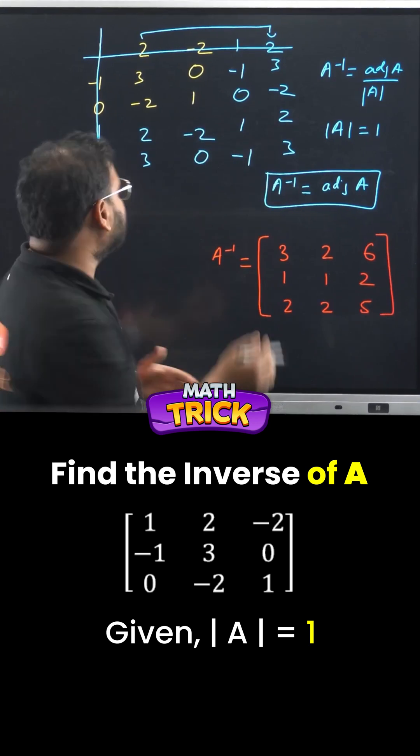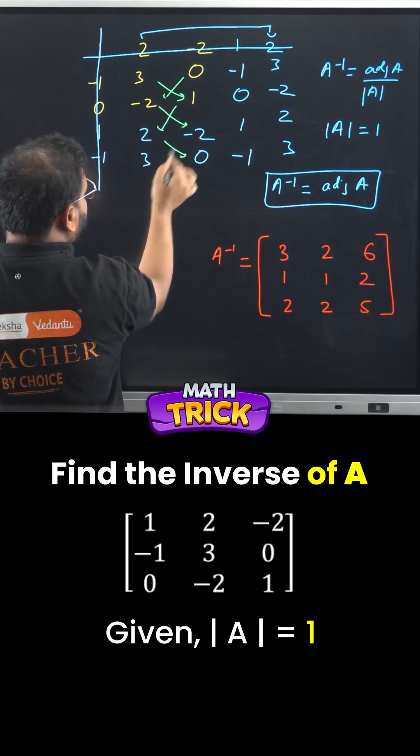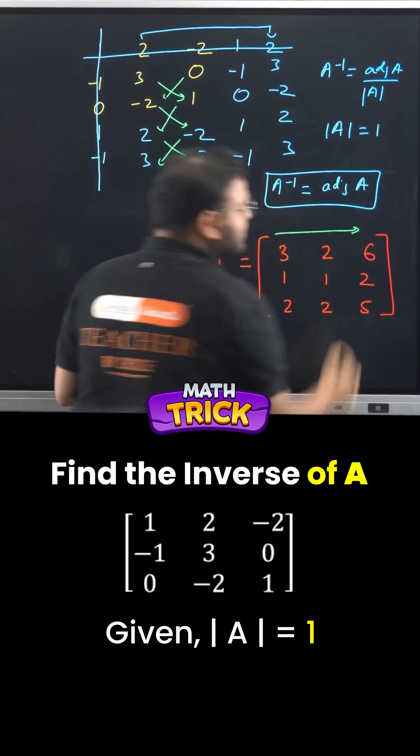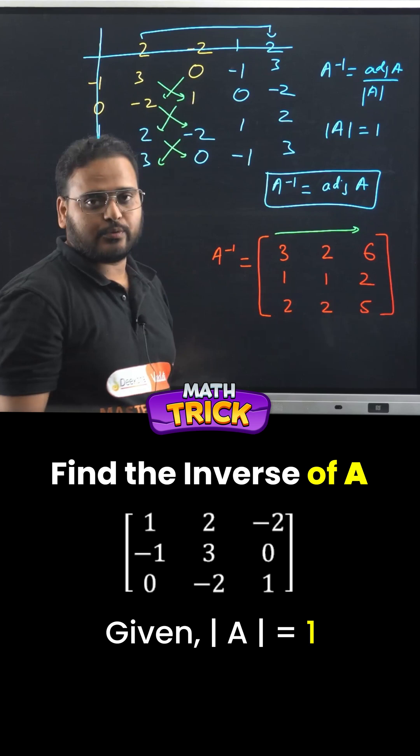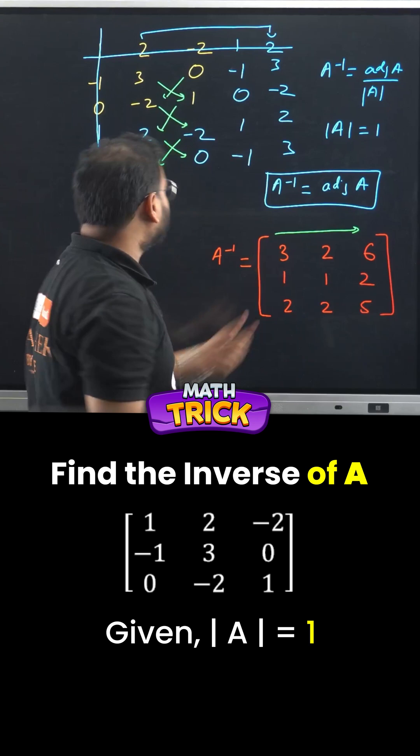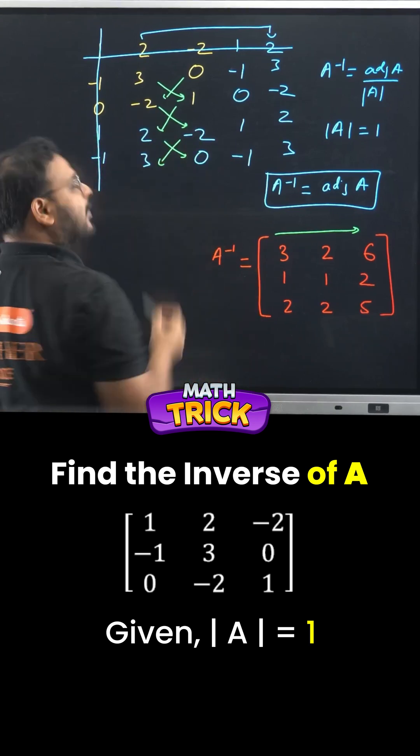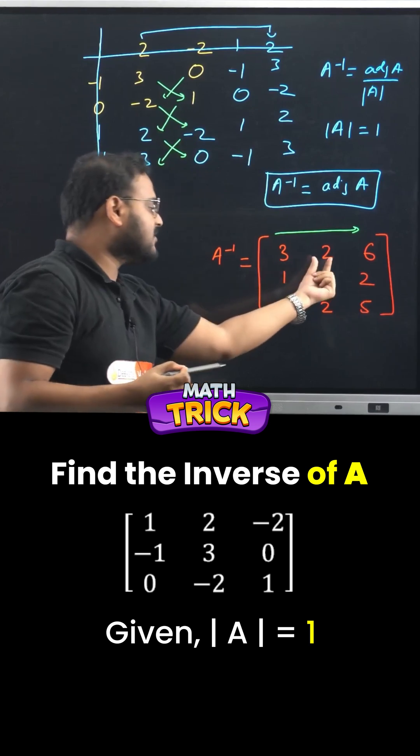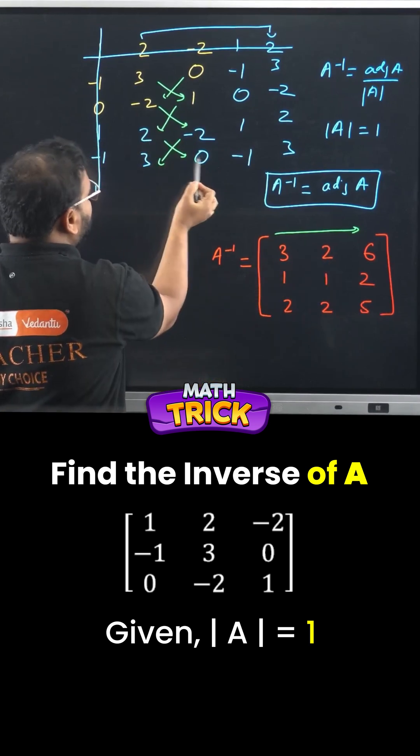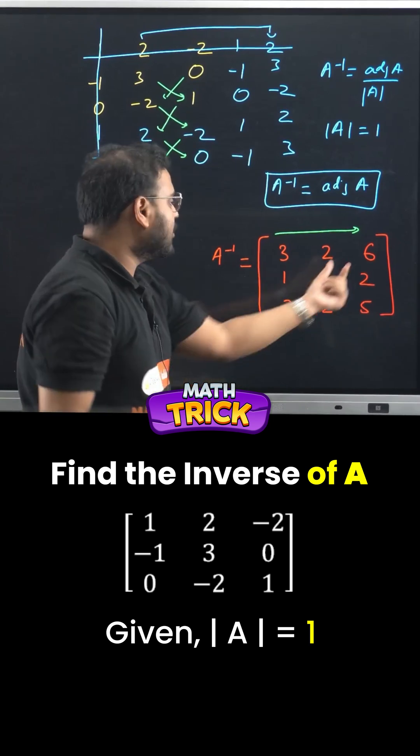Next we are going to find determinant of these 2x2 order matrix in given columns and write in the row of these A inverse which is nothing but adjoint. Okay, have a look, 3x1 is 3, minus 2x0 which is 0, answer is simply 3. Next we get minus 2x2 is 4 and we have 2x1 which is 2, subtraction is 2. Last one, 2x0 is 0 and we have 3x-2 is minus 6, subtraction makes positive, so plus 6.